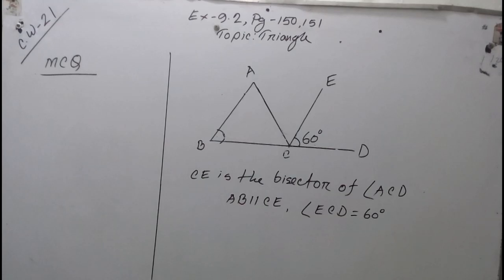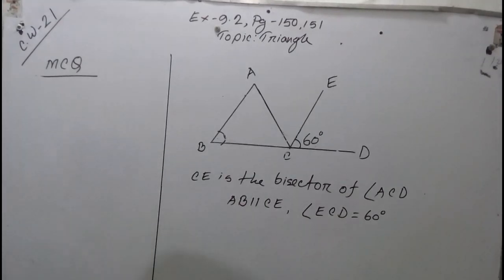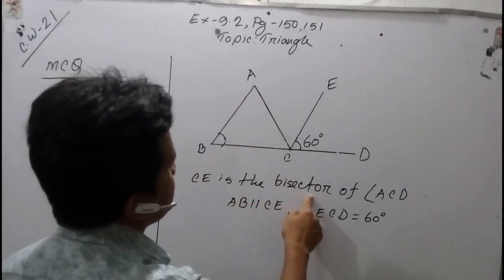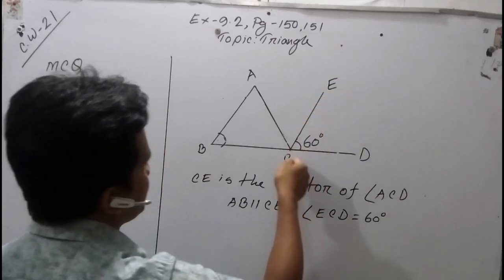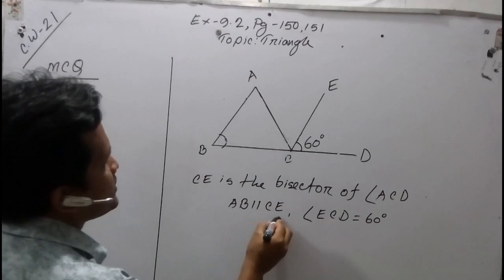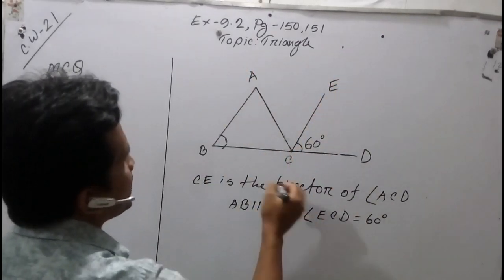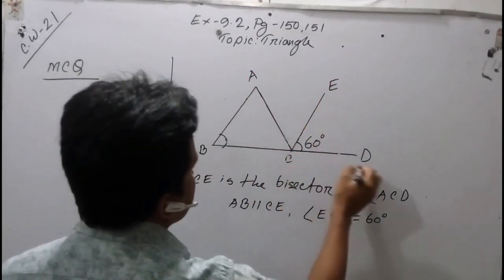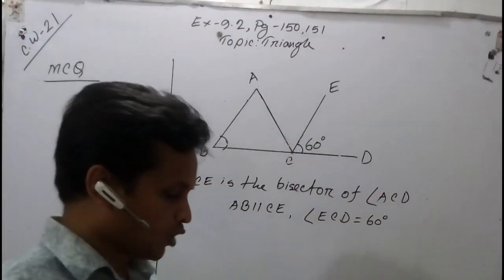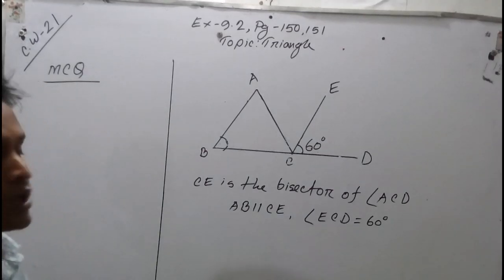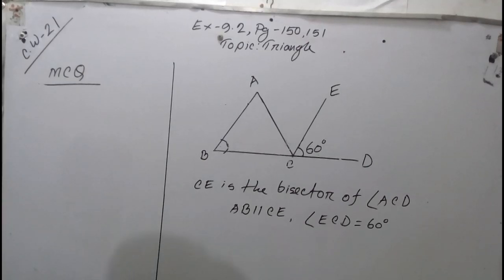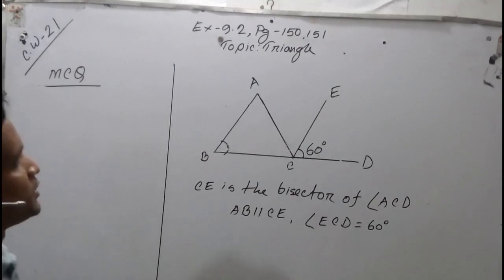In question number one, there is a stem: ABC is a triangle where CB is the bisector of angle ACD, CE is the bisector of angle ACD, and AB is parallel to CE. Given that angle ECD is equal to 60 degrees. We have to solve MCQs 1, 2, and 3 from this stem.